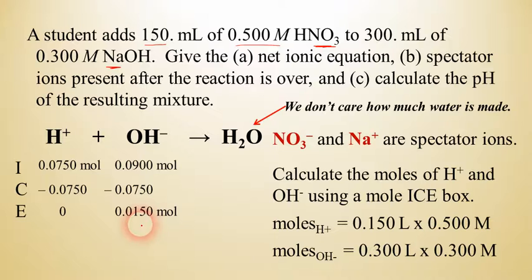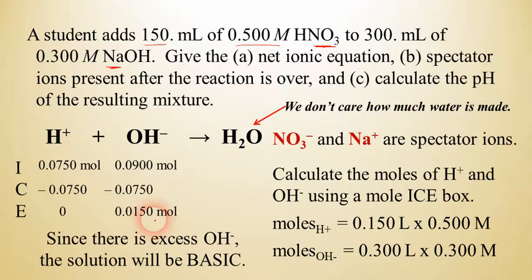Now, if we're interested in finding the pH, we need to first of all find the molarity of the hydroxide. Now, since we have more hydroxide excess, this is going to be a basic solution. So we're looking for a pH that's going to be greater than seven.